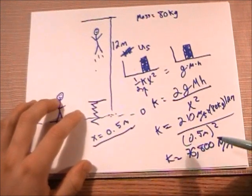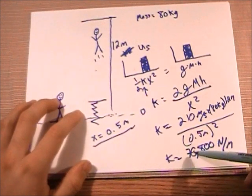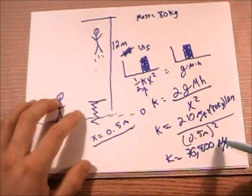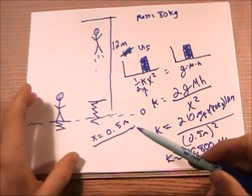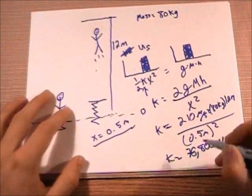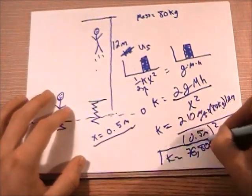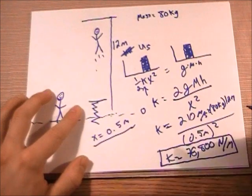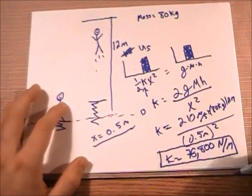And what that means is that for every 76,800 newtons that you apply to this spring, it's going to be compressed one meter. So you can see that this is a very, very strong spring that you need to launch an 80 kilogram person 12 meters in the air.